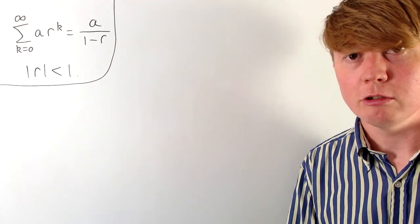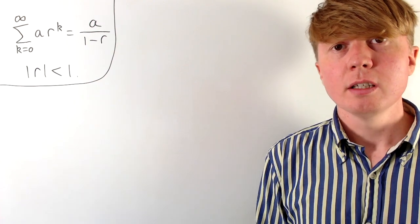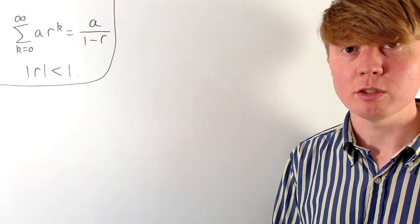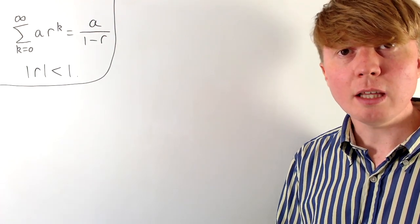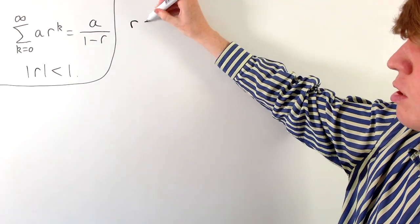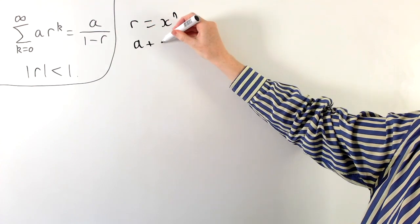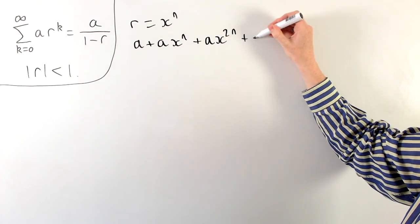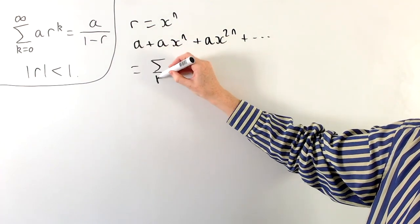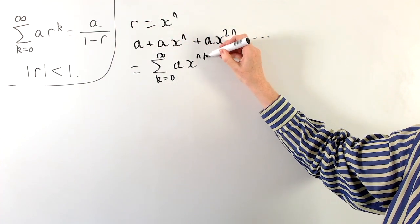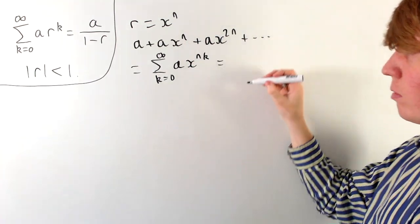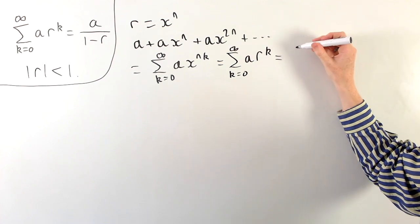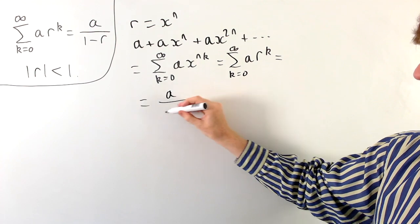For our second proof, we split the original sequence into n different subsequences, using the fact that the sum of all subsequences must equal the sum of the original sequence, from which the partial sum formula follows. To get these subsequences, we replace r by x to the power of n. So a plus a r becomes a plus a times x to the n, then a times x to the 2n, and so on. More formally, this is the sum from k equals 0 to infinity of a times x to the nk. Since x to the n is just r, we can apply our formula to get a over 1 minus r, which with r equal to x to the n gives a over 1 minus x to the n.